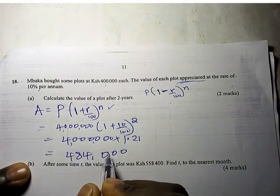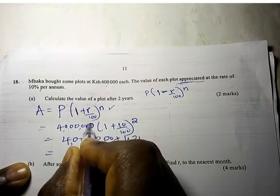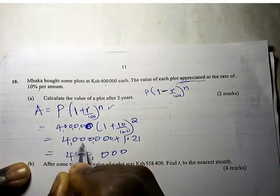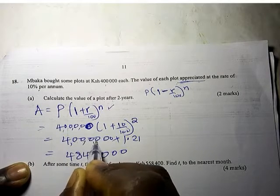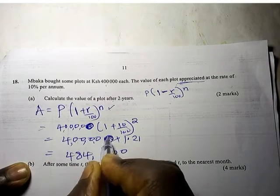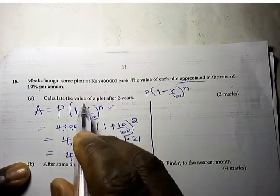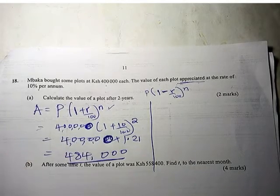We require 400,000, not 4 million. So after two years, this is the amount of that plot - 484,000.